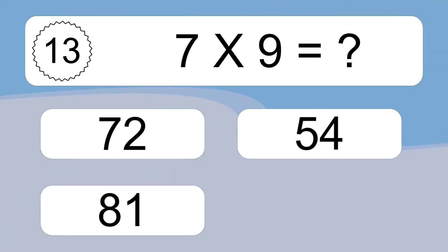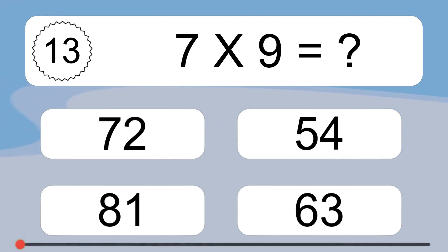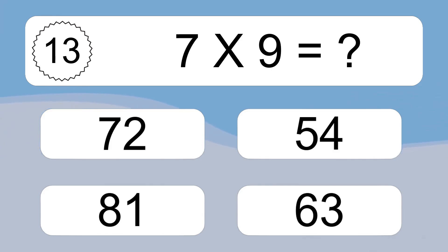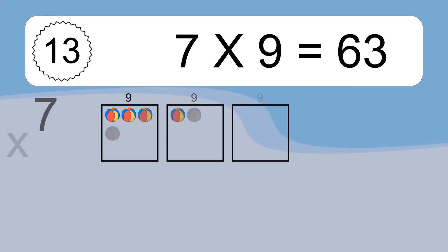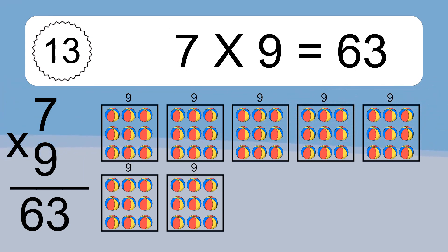7 times 9 equals what? 7 times 9 equals 63. We have 7 boxes, and each box has 9 colorful balls inside. If you count all the balls in all the boxes together, you will have 7 times 9 balls. This equals 63 balls.